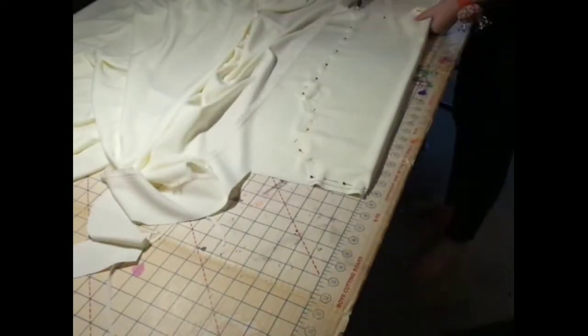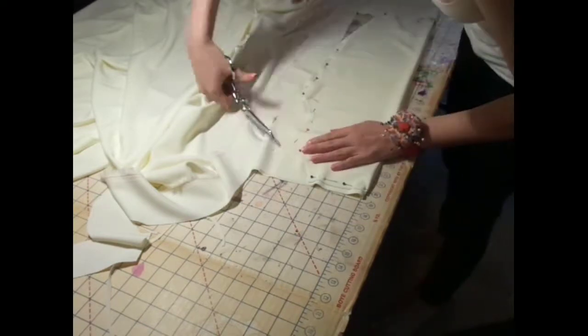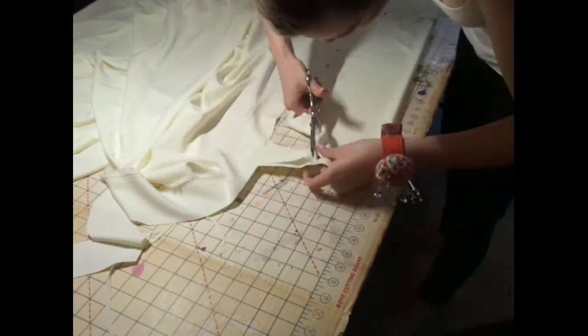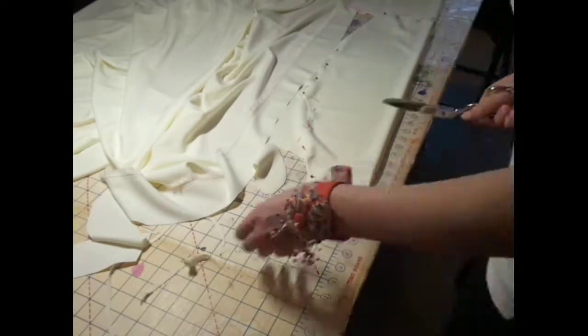Here I'm cutting out the back piece of my shirt which will be basically the exact same as the front except the armhole will be slightly different. So I'm using the back part of the cardigan to cut out the shape of that armhole.